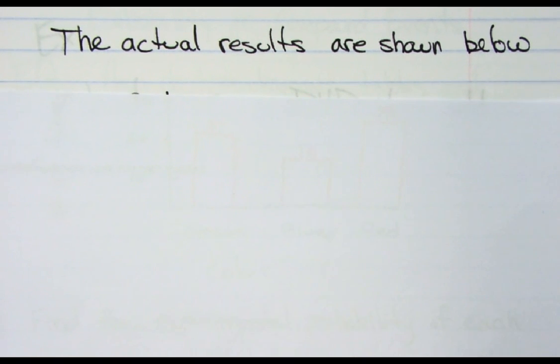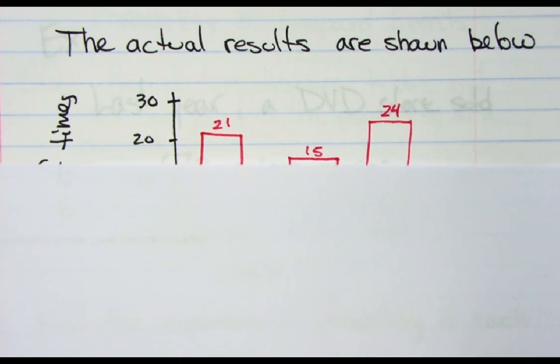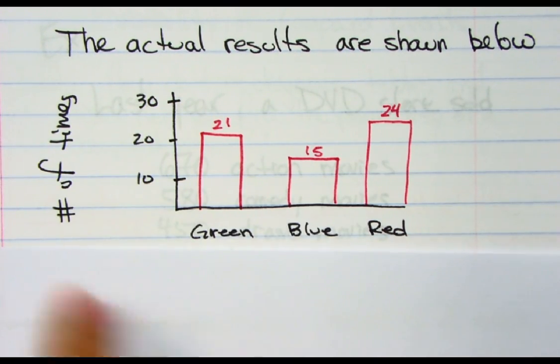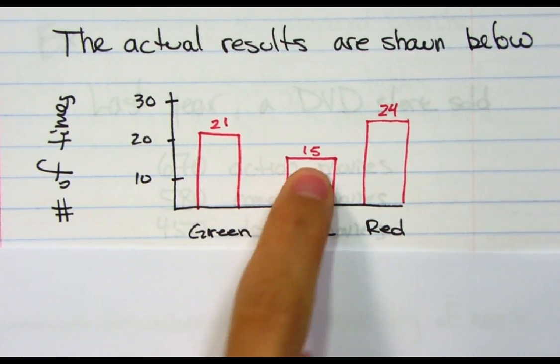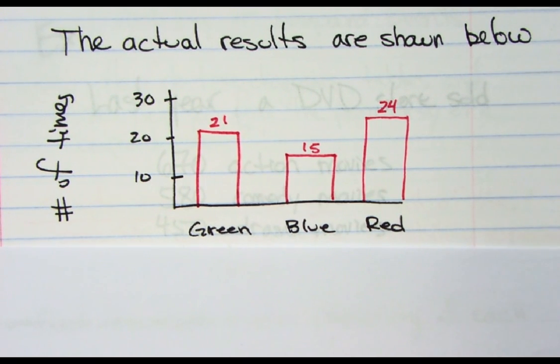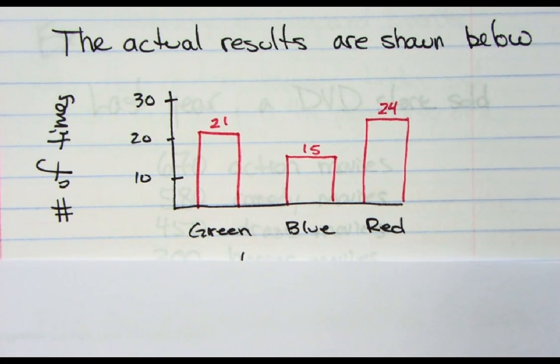Let's say I actually conducted that experiment and these were the results. This is the number of times and these are the three colors. If you notice, if I take 21, 15, and 24 and add it together, I get 60. So I did spin it 60 times, but this is the actual results.